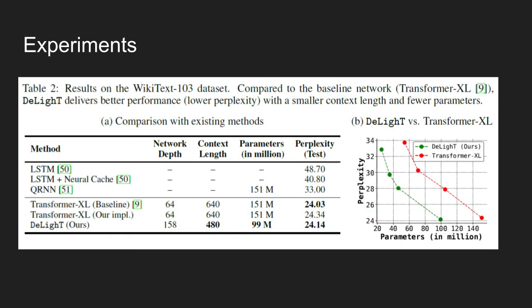Lastly, the table shows the results on WikiText-103 dataset. Compared to the Transformer XL model, the DeLighT model achieves lower perplexity with smaller context length and fewer parameters.